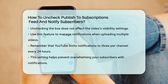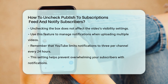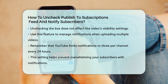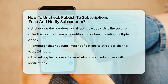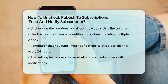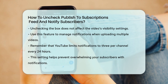In summary, to uncheck the Publish to Subscriptions Feed and Notify Subscribers option, go to YouTube Studio, upload your video, fill in the details, scroll down to the License section, and uncheck the relevant box. This way, you can control when and how your subscribers are notified about your new videos.